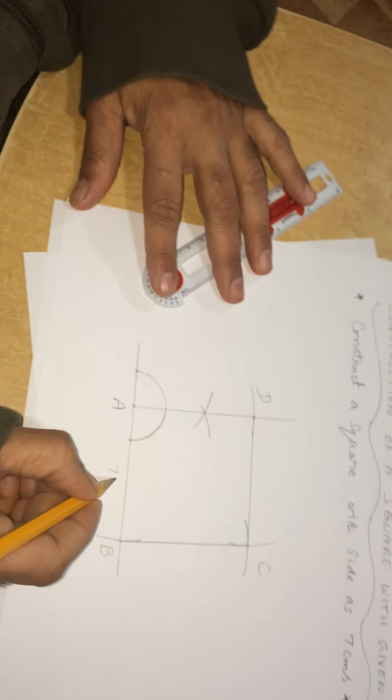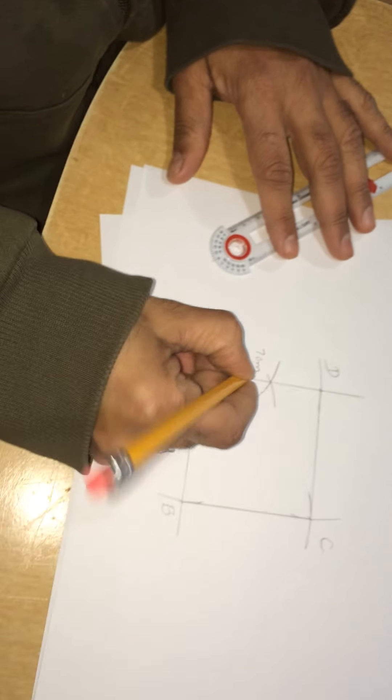With this, I got A, B, C, D. It is a square.